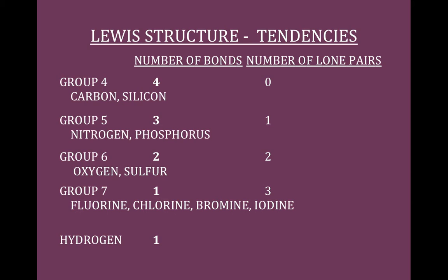Hydrogen, when we're making a molecule, is always going to go on the outside. It can only make one bond — you would never put hydrogen in the middle. The next slide talks about some tendencies in terms of drawing structures: elements that want more bonds are going to be in the middle, and elements that want fewer bonds are going to be on the outside. That's something you'll get used to with practice, and I'll make sure to give you tons of practice.